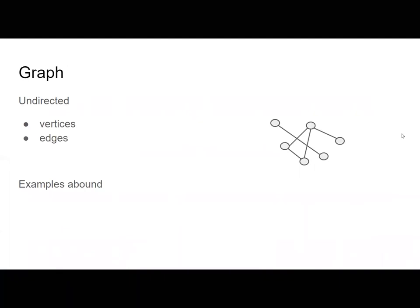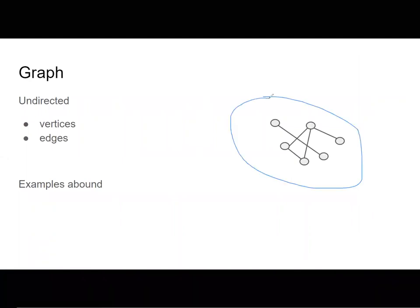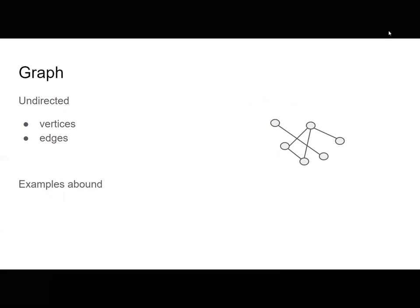This is about graphs. Graphs have vertices and edges, and there are lots and lots of examples of graphs: communication networks, road networks, and other kinds of networks.